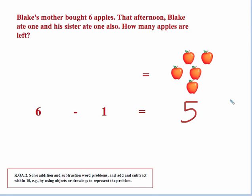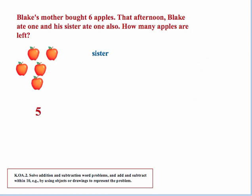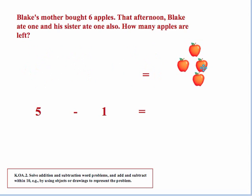Now we go on to the second part of the problem, where we have five apples and his sister eats one. Students can finish out the problem — she ate her apple, so we're left with four apples remaining.